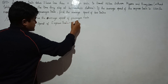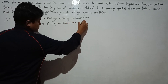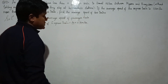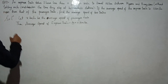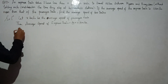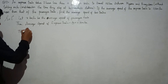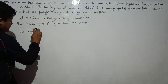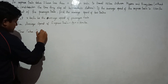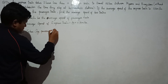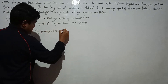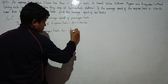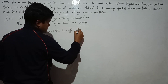Then the average speed of the express train equals x plus 11 kilometers per hour, since it is 11 kilometers more. Time taken by the passenger train, say t1, equals distance divided by speed, so t1 equals 132 divided by x.